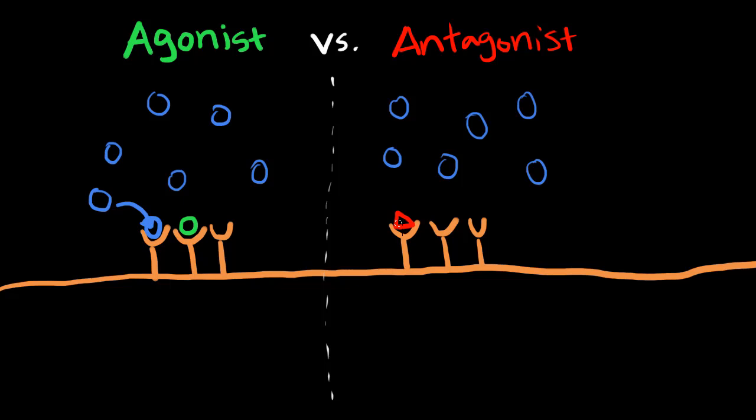So this receptor will stay here. It won't activate it because it doesn't have the same shape like in this example. But what it's going to do is essentially block these neurotransmitters from then binding. And so if we have a bunch of them, they're going to block all these receptors.